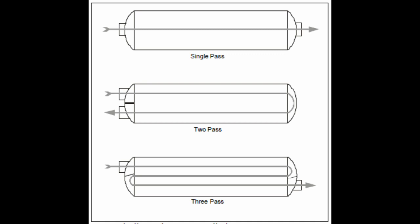In contrast, a two pass heat exchanger, also known as a double pass heat exchanger, has the fluid flow through the tube twice before exiting. The fluid enters the heat exchanger at one end and flows through one set of tubes before turning around and flowing back through another set of tubes in the opposite direction.